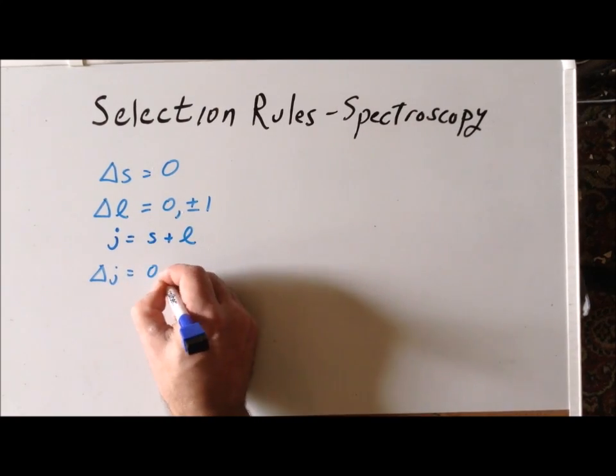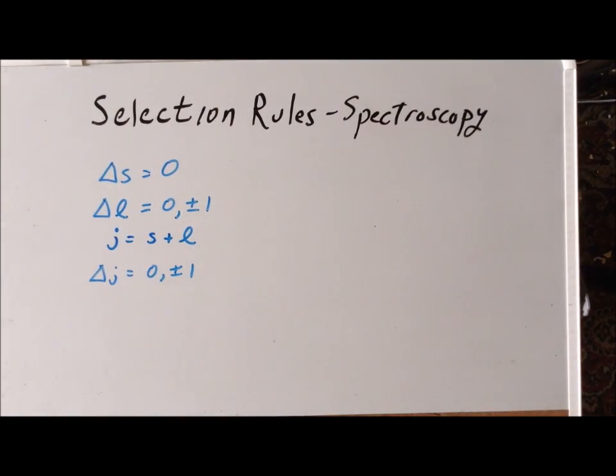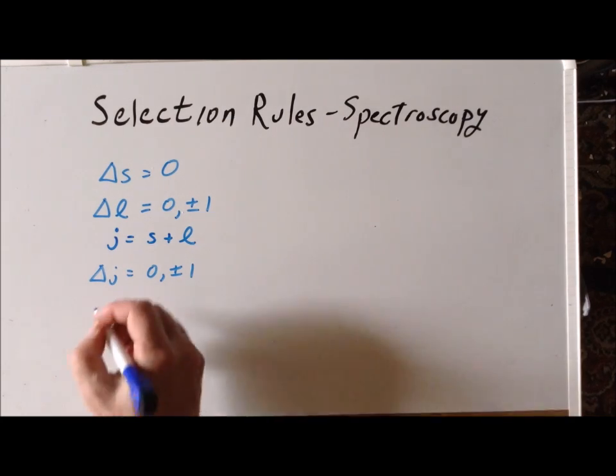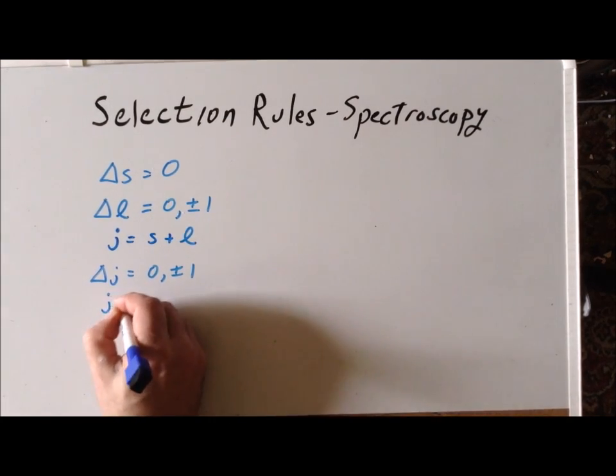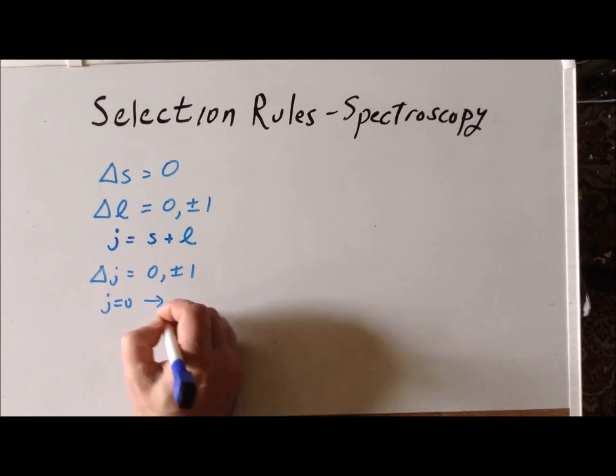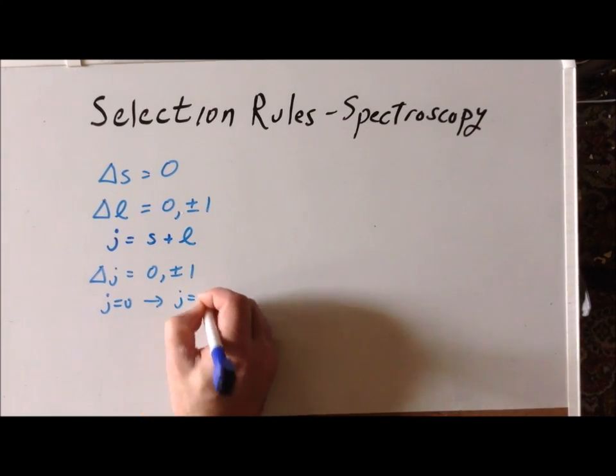Plus or minus one. But there's one extra condition in that if we have a situation where J is equal to zero, it cannot end in a state where J is equal to zero. So we can't go from J equals zero to J equals zero.